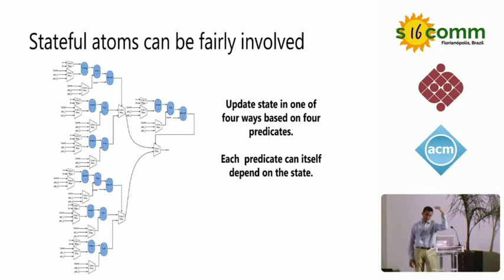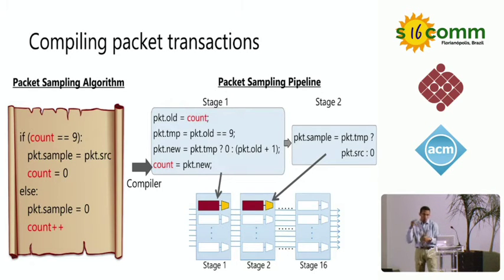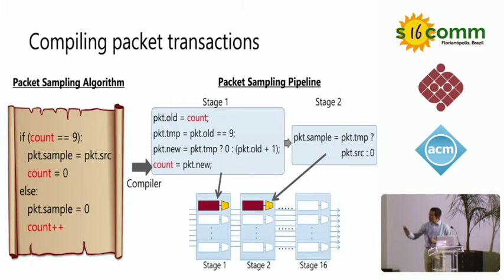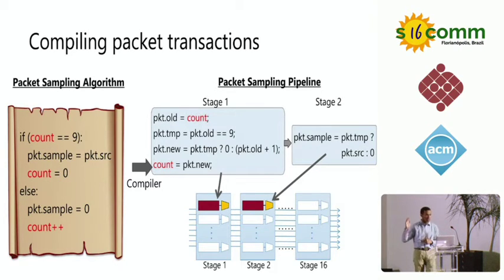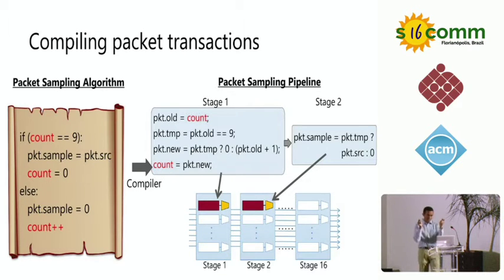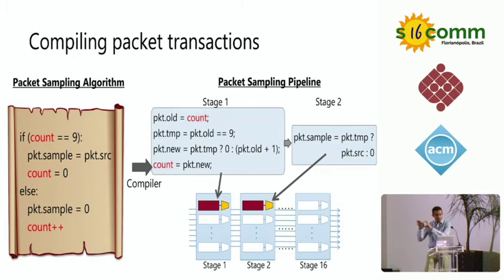So how do we bridge the gap between the high-level packet transaction abstraction and the low-level atom abstraction? We have a compiler. The programmer writes code in an imperative language called Domino — the major restriction being no loops, because we don't know how to synthesize for loops on a line-rate switch. The compiler does two things: it extracts codelets, which are fragments of code that, when run atomically, guarantee transaction semantics; and then maps these codelets down to atoms in the hardware.